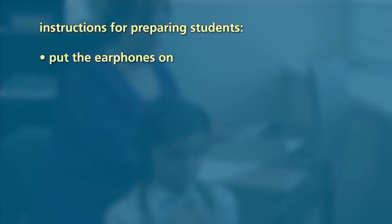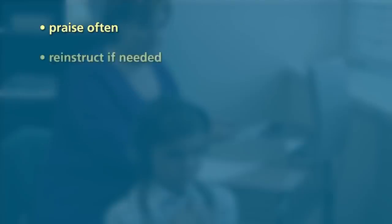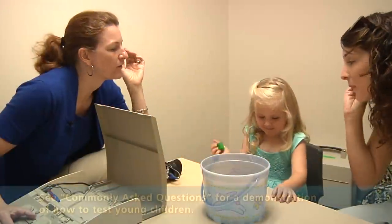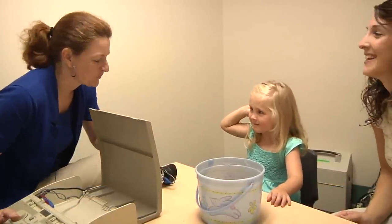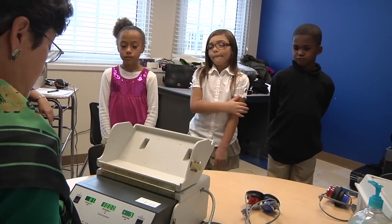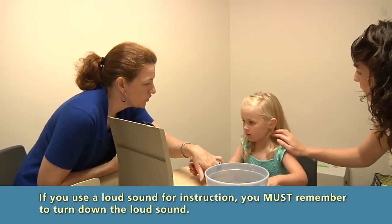Use the following instructions to prepare students for the hearing screening: 'I am going to put these earphones on your ears. You are going to hear some beeps in your right ear, and then in your left ear. Raise your hand every time you hear a beep, even if it is very, very soft. Put your hand down when the beep goes away.' Give the student frequent praise for listening carefully. If a student does not seem to understand the directions, remove the headset and repeat the instructions. For young children, practice the hand raise before the earphones are placed. If you do a demonstration by presenting a loud tone such as 100 dB, you must always turn the intensity down before placing the earphones on the child, as a 100 dB tone can be painfully loud next to the child's ear.